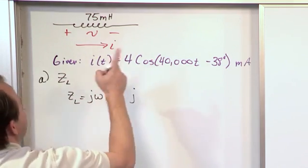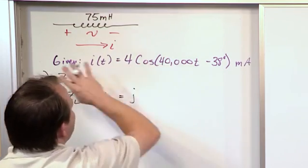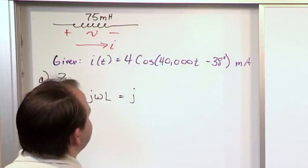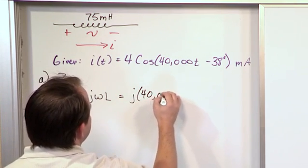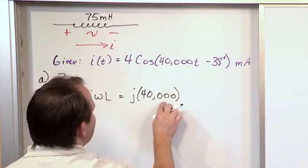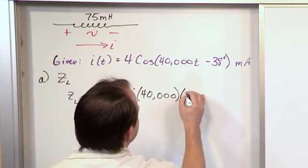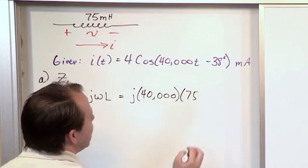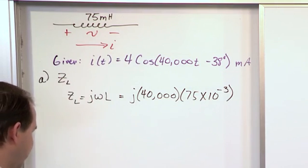So we just say j times omega. Omega is given right here because we know that the driving source is going to govern the frequency for everything in this circuit, in the circuits that we're studying. So 40,000 radians per second. That's j omega times L, which is the inductance of 75 millihenries. Now you can't just put 75 here. You have to deal with Henry. So you need to go ahead and convert that by doing 75 times 10 to the minus 3.